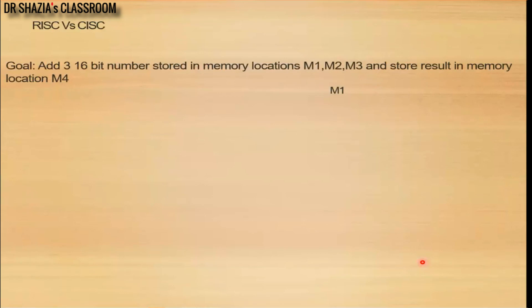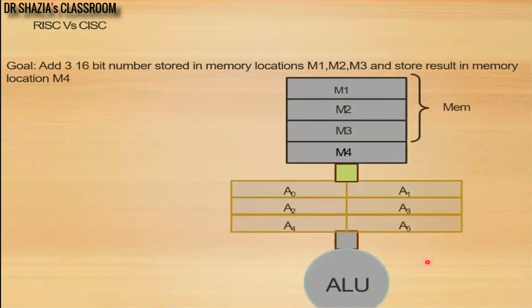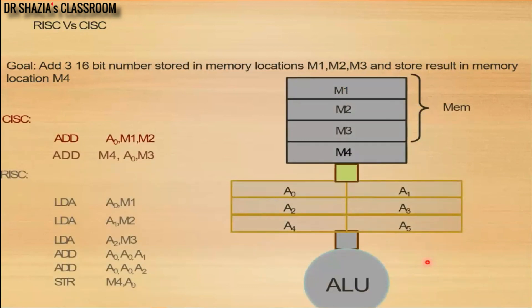While writing programs in CISC, it becomes easier because there is no limitation on operands — they can be within a register or stored in memory. Whereas in RISC, all operands must be within registers inside the CPU. To compare these architectures, I have taken three 16-bit numbers stored in memory locations M1, M2, and M3. The objective is to add these three numbers and store the result in memory location M4.